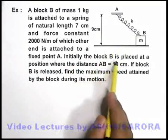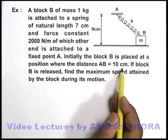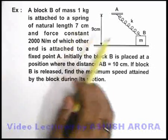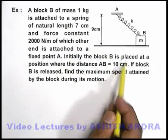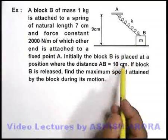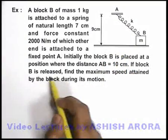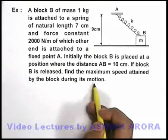It is given that initially the block B is placed at a position where the distance AB is 10 centimeters. The natural length is 7 centimeters and right now the spring length is 10 centimeters, that means the extension in spring is 3 centimeters. Now if block B is released, we are required to find the maximum speed attained by the block during its motion.